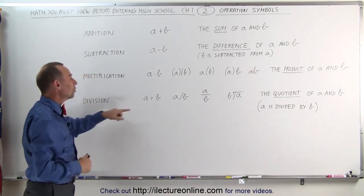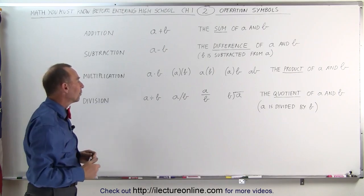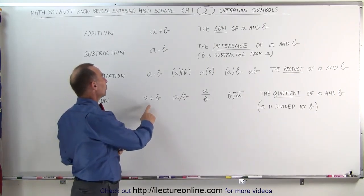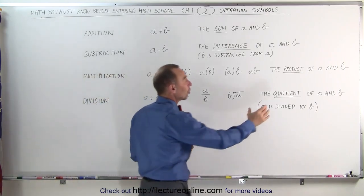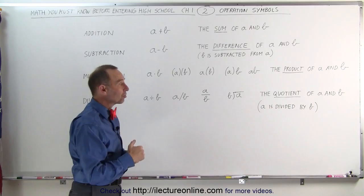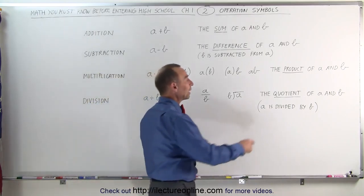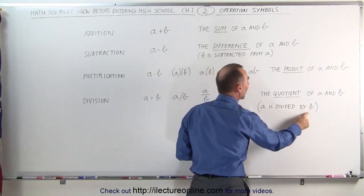When we get to division, we use this symbol right here. It's a line with two dots, one above and one below the line. So this means the quotient of a and b. The quotient is the result of division. Order here again, just like with subtraction, is very important. If you write the quotient of a and b, that means that a is divided by b.